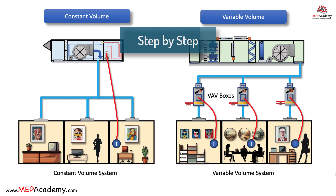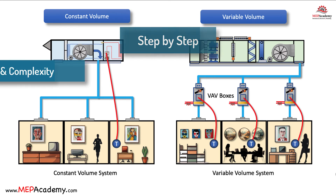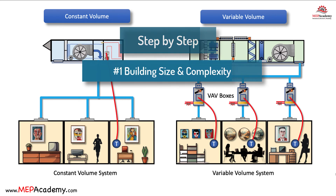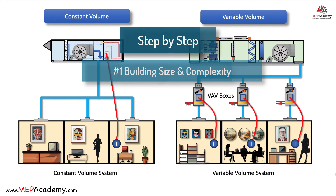Making the Right Choice. Selecting between VAV and constant volume systems involves a careful analysis of your building's specific needs, goals, and constraints. Here's a step-by-step approach to help you make the right choice. 1. Evaluate Building Size and Complexity: assess the size, layout, and diversity of your building's zones to determine whether VAV or constant volume systems are better suited.